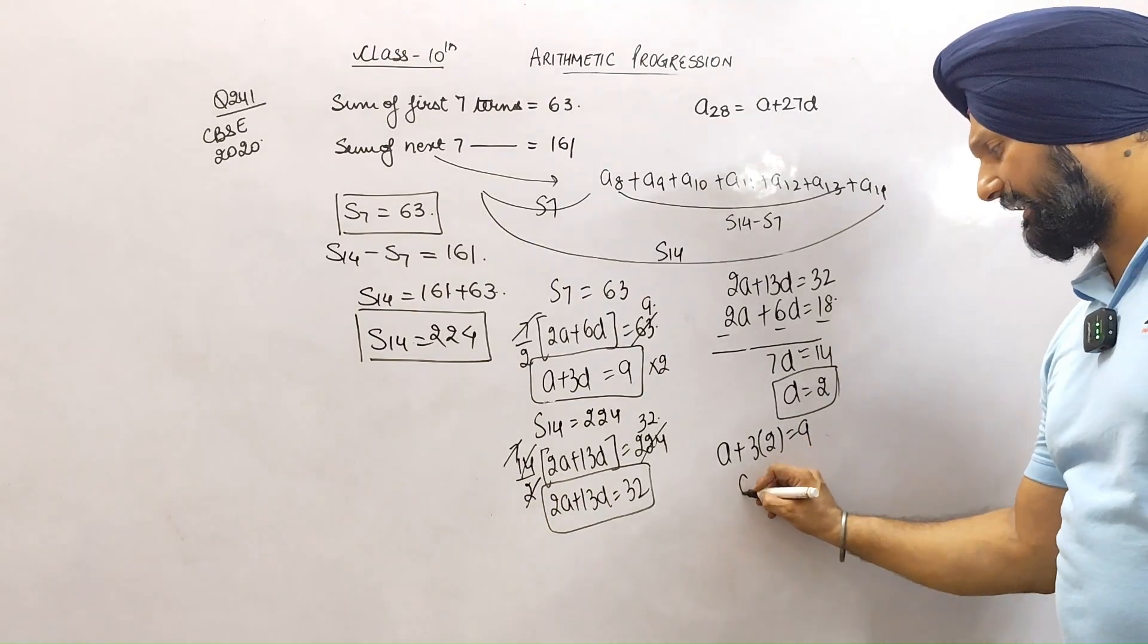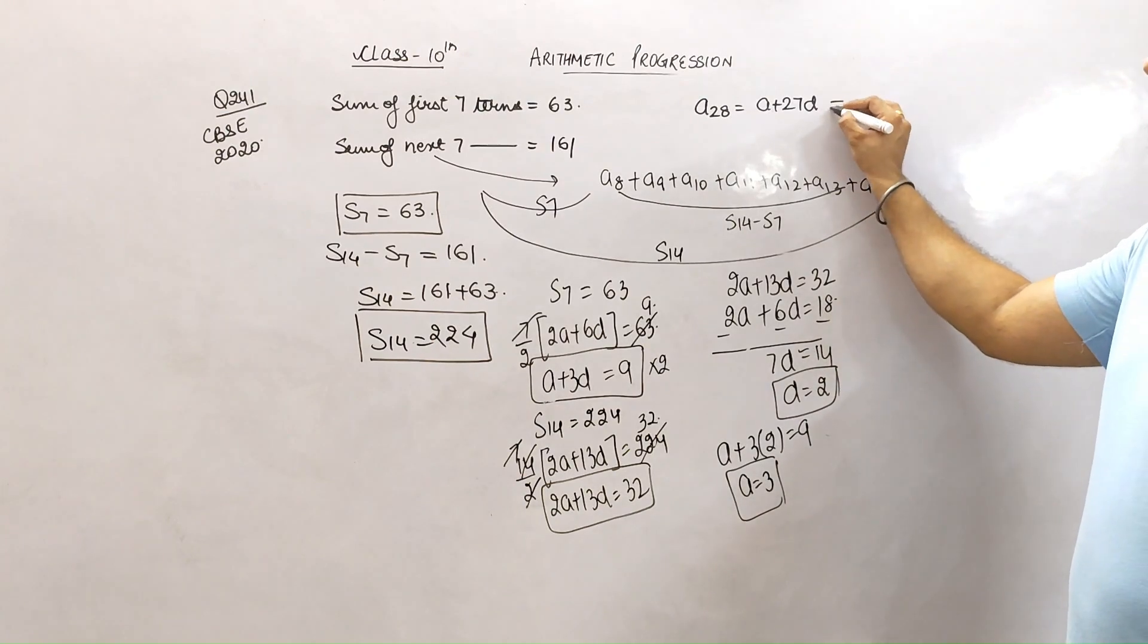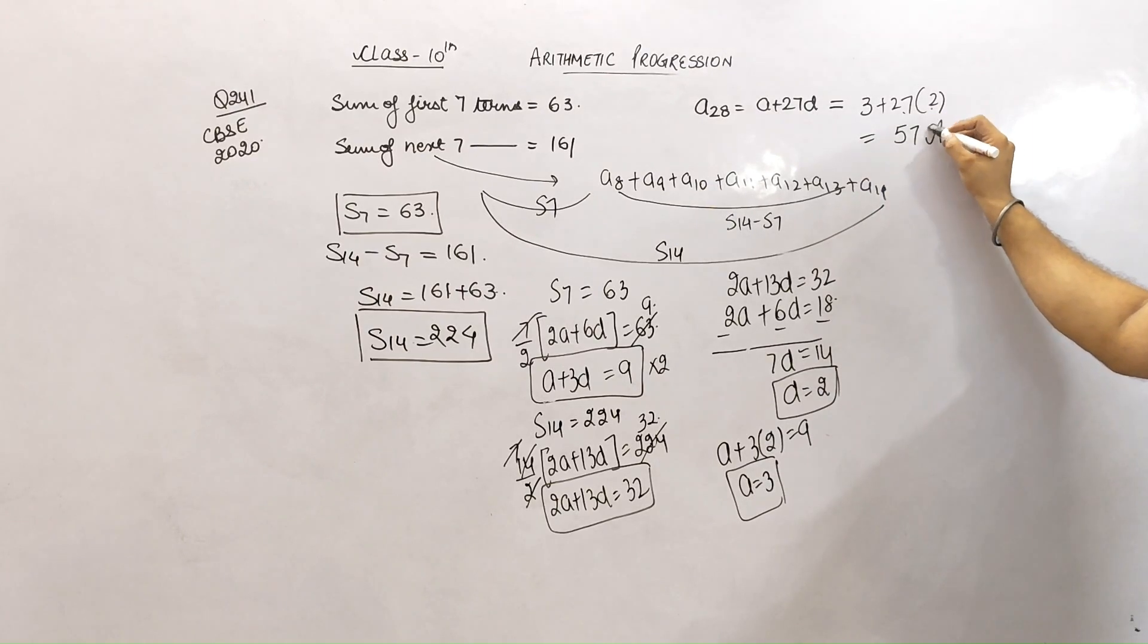Now what is a28? a28 = a + 27d. Substituting a = 3, 27d means 27 times 2 equals 54. 54 + 3 = 57. So this is my answer.